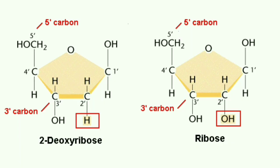This diagram shows the structures of deoxyribose and ribose. Deoxyribose is the sugar present in DNA, while ribose is the sugar present in RNA.